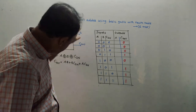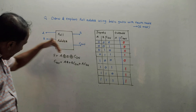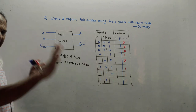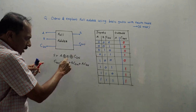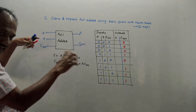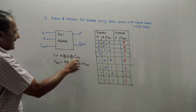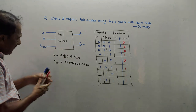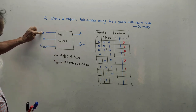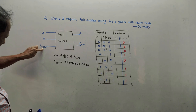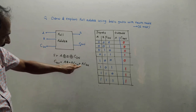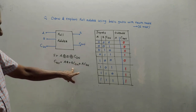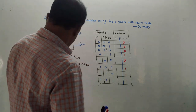You need to memorize two equations for the full adder. The sum S is given by A XOR B XOR C-in — XOR addition of all three inputs. To generate carry out, remember it as AND combinations: A into B, plus B into C-in, plus A into C-in. That is, AND of first and second, second and third, and first and third, then OR all these values.